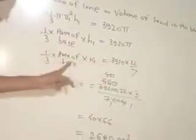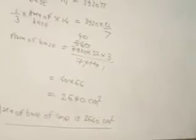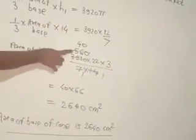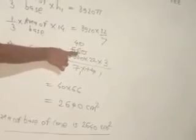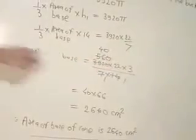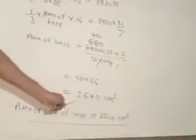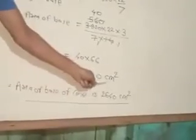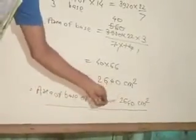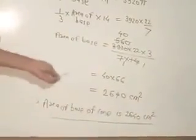3 multiplied and 14 divided. 3920 into 22 into 3 upon 7 into 14. It is the area of the base. 7 5s are 35, 7 6s are 42, 0, 14 4s are 56 and 0, 40, 40 into 22 into 6, 66. Multiplication 2, 6, 4, 0, cm square. Therefore area of the base of cone is 2640 cm square. It is the area of the base of cone.